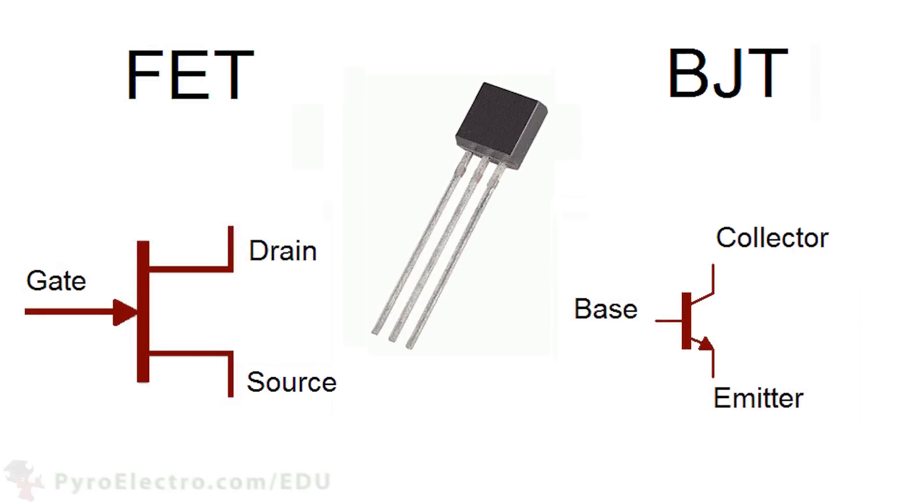Currently, there are two main types of transistors that are used: the BJT, short for Bipolar Junction Transistor, and the FET, short for Field Effect Transistor. Each of these devices has three pins. On the BJT, a base, collector, and emitter, and on the FET, a source, gate, and drain.